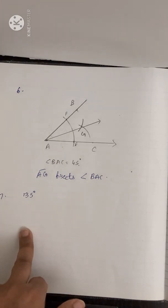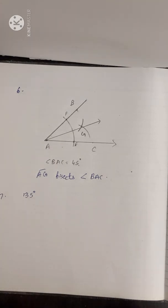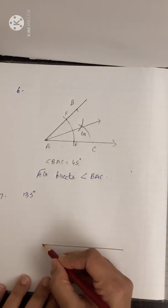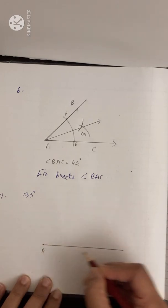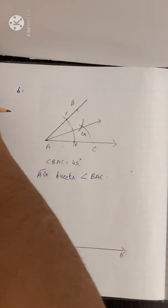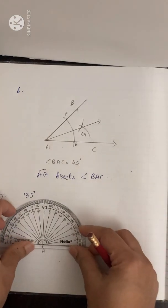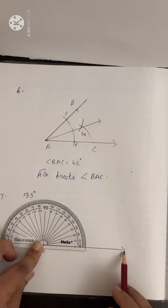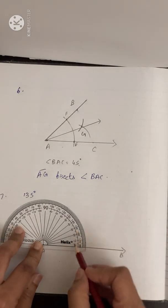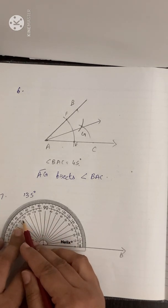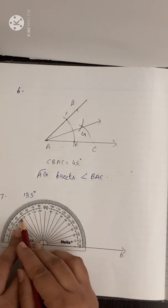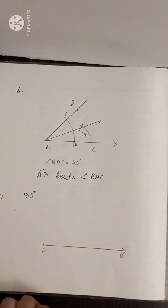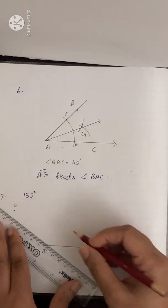First draw a ray AB. Take the protractor, keep the zero line along AB, start from zero and go to 135 — mark that point and let it be C. Join A and C.